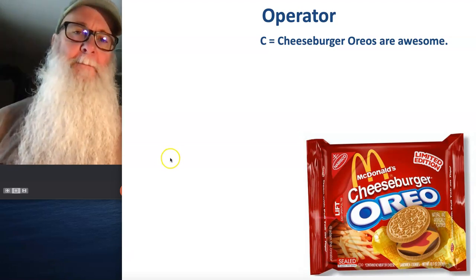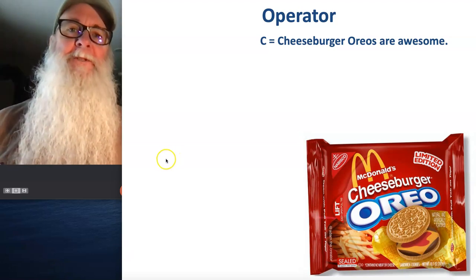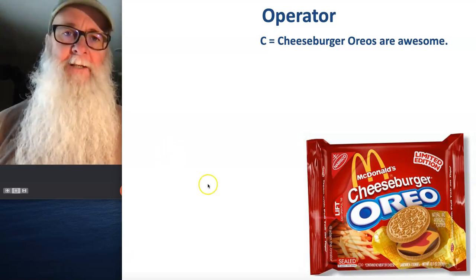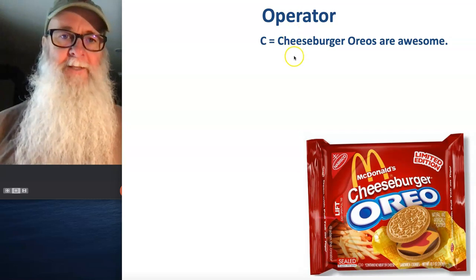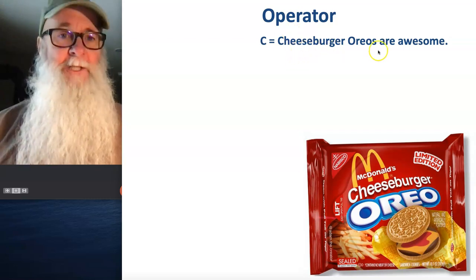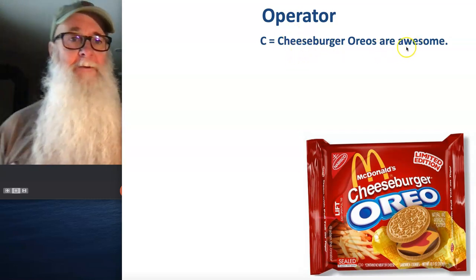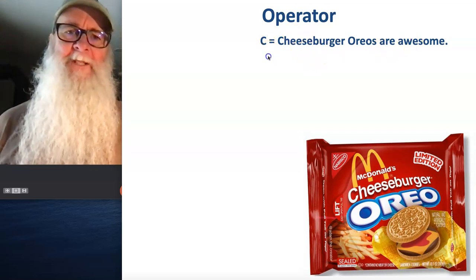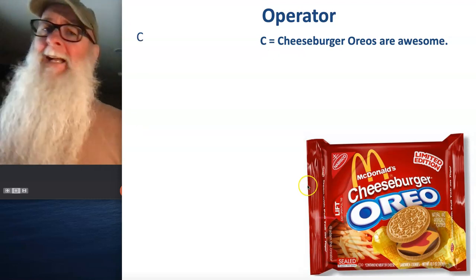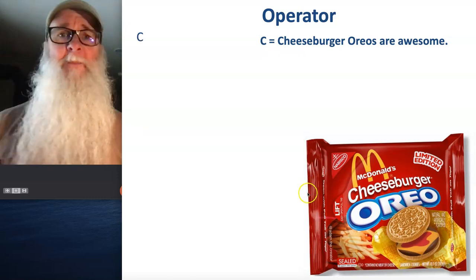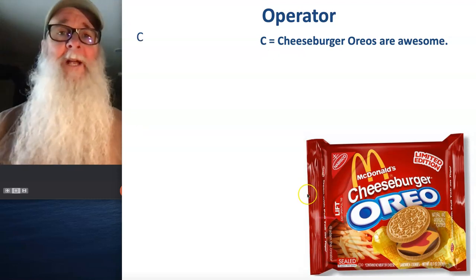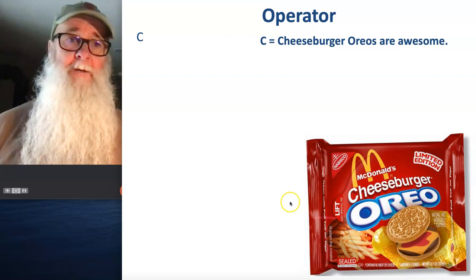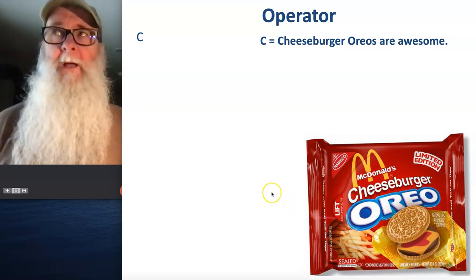Let's take a look at one of the simple statements we've been using in our discussion of connective operators. The statement, 'cheeseburger Oreos are awesome,' which we can easily represent with the letter C. And now every time we say or write C, we know what we're really saying is 'cheeseburger Oreos are awesome.'